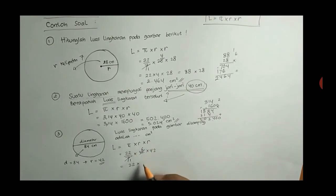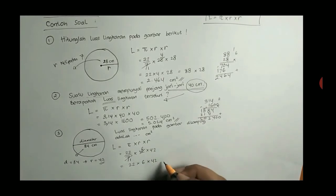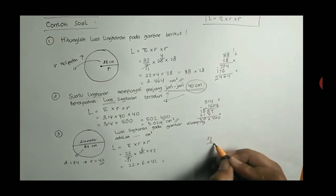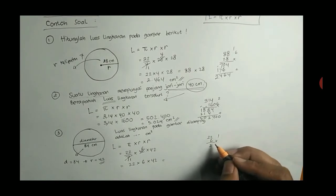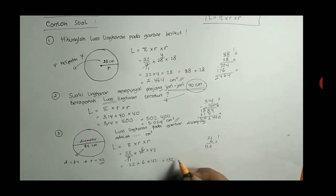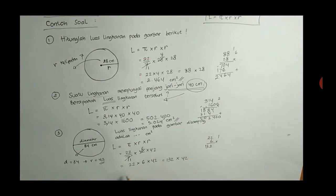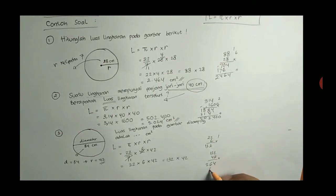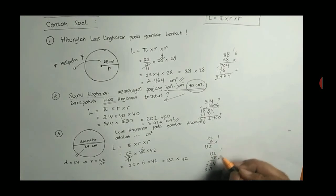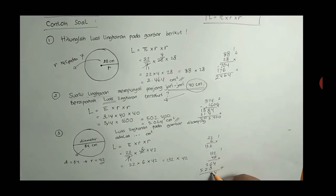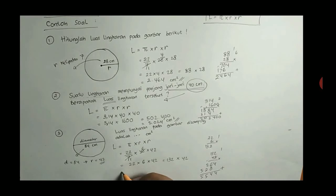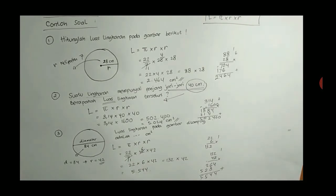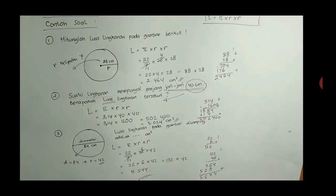Ini perkalian bersusun seperti biasa, boleh 22 kali 6 dulu. Hasilnya adalah 132. Jadi 132 dikali 42 yang belum dihitung, dihitung lagi secara bersusun. 132 dikali 42. Boleh kalian ulang-ulang kalau belum jelas ini. Hasilnya disini adalah 5544 cm persegi. Saya kira 3 contoh soal ini.